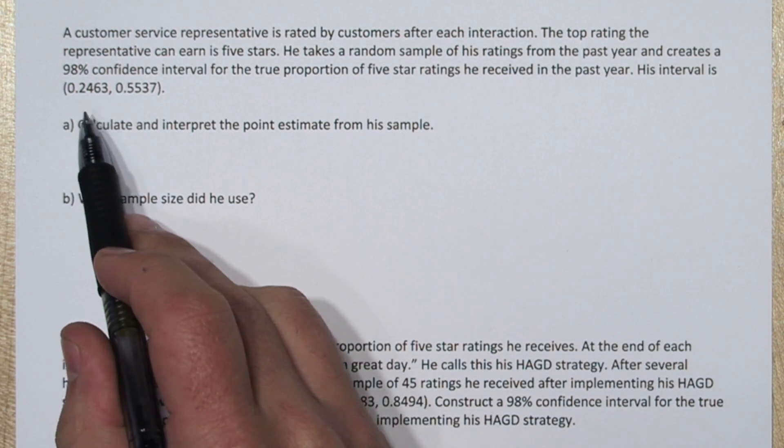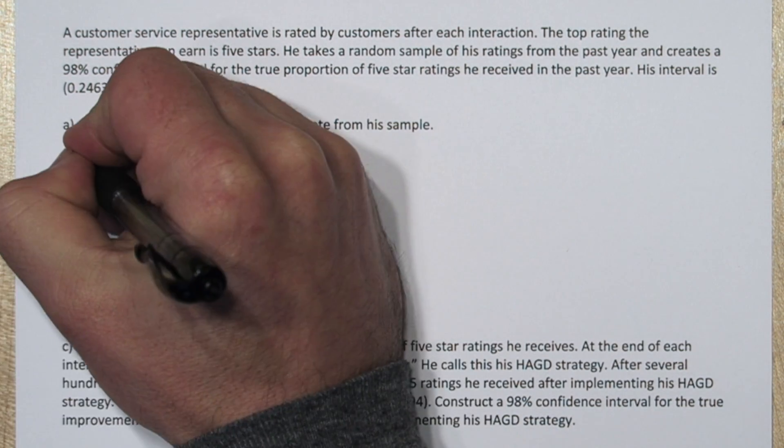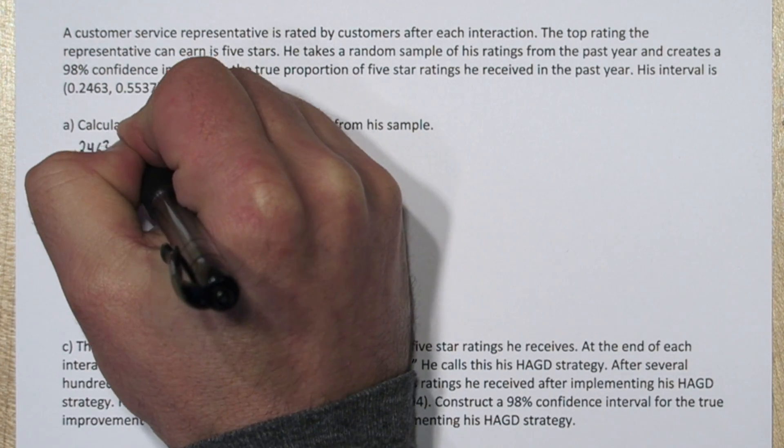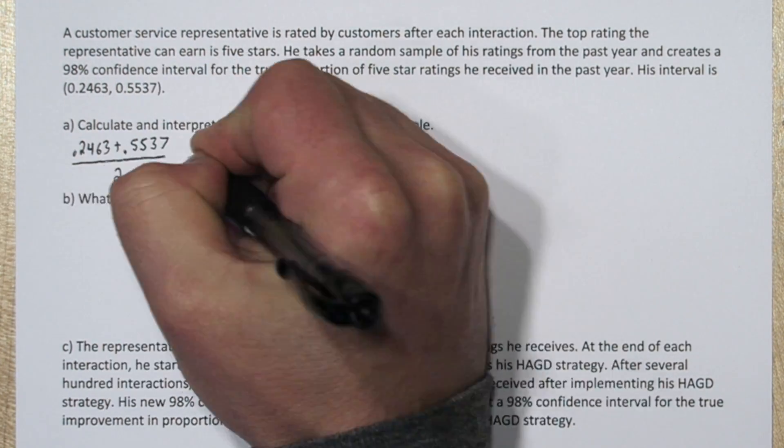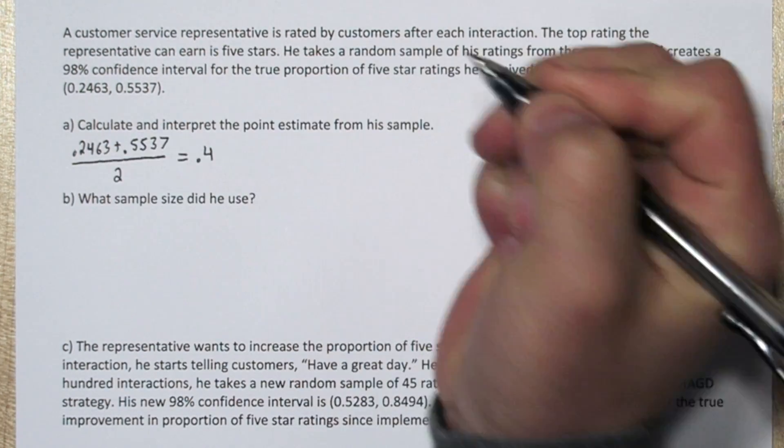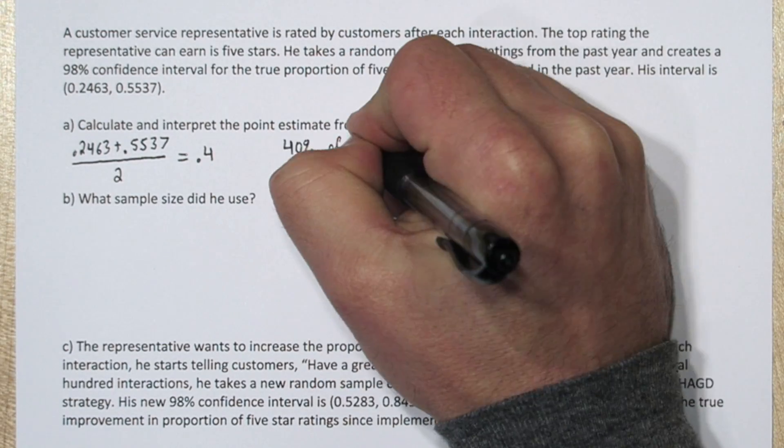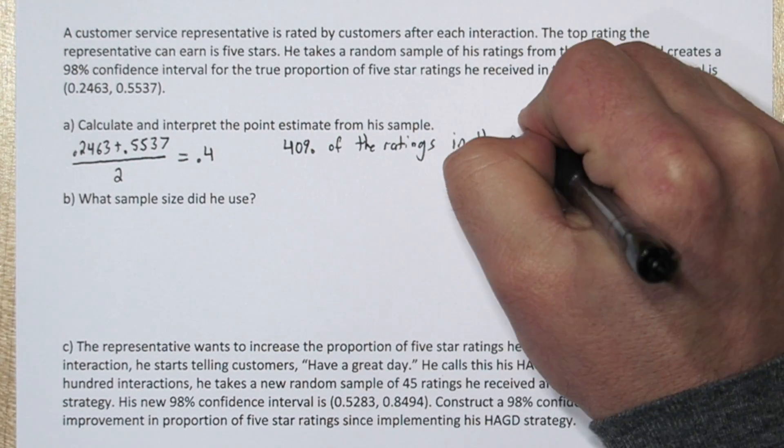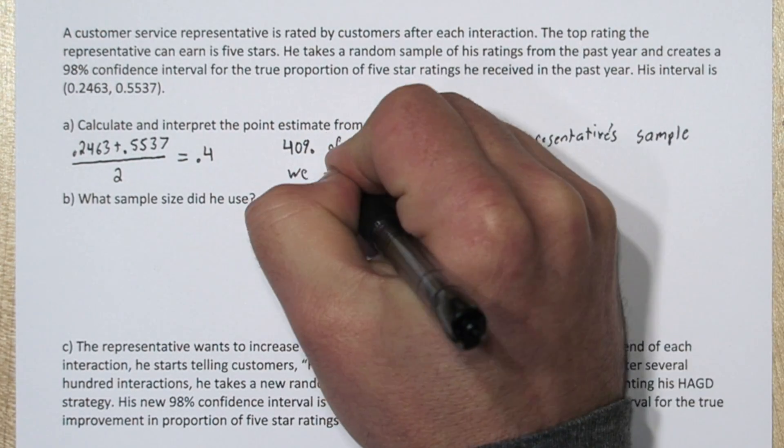Now, the point estimate is the center of our confidence interval. So if we find the average of the limits of our confidence interval, we'll have the point estimate. It turns out it's 0.4. And we can interpret this as 40% of the ratings in the representative sample were 5 stars.